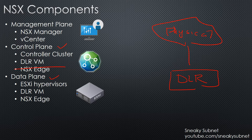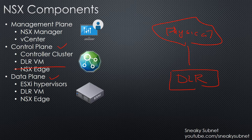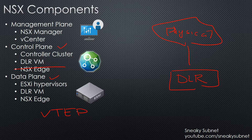Finally, we have ESXi hypervisors. The hypervisor is the key element in NSX since it is directly involved in the data plane. Each hypervisor is responsible for local switching, local routing, and local firewalling. Each hypervisor acts as a VTEP in order to leverage VXLAN technology.